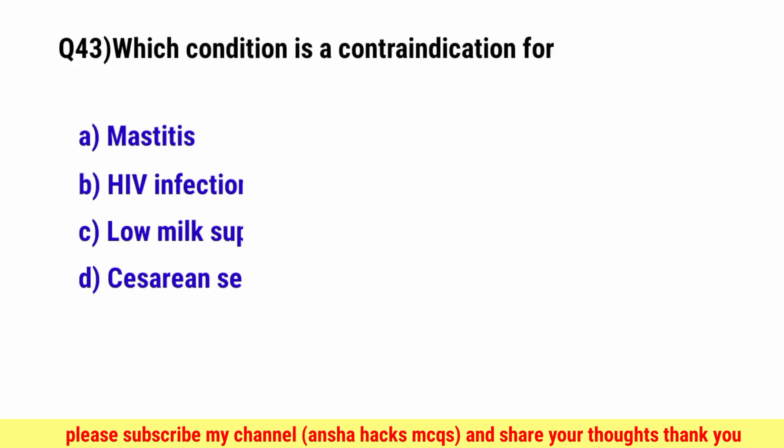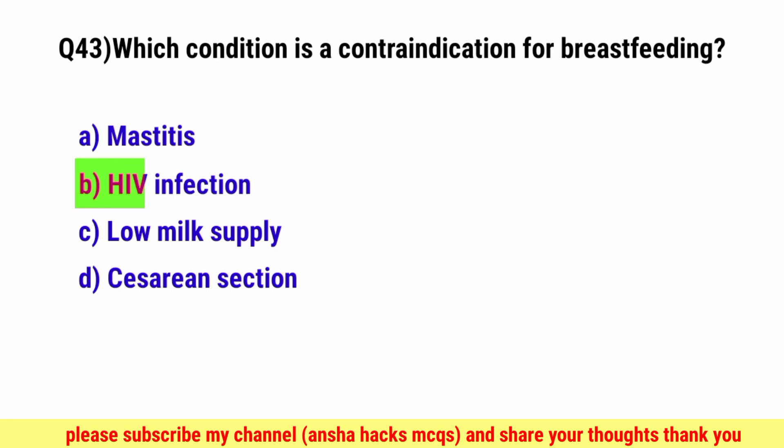Question No. 43. Which condition is a contraindication for breastfeeding? The correct option is B, HIV infection.